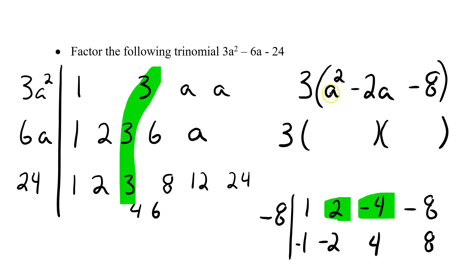I take my a² and I put an a, put an a, positive 2 and -4. So my original trinomial was 3a² - 6a - 24. When I factored, I get a 3 and then a + 2 and a - 4.